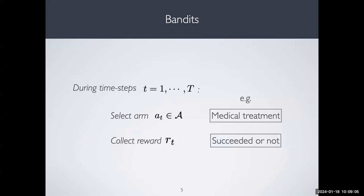We'll work in a specific kind of scenario I really like, called bandits. In a bandit setting, you have a sequential interaction between a learner and the world in time steps. Think of it as a patient interacting with you and you want to propose a particular medical treatment — we'll call the treatment an arm. When we run the treatment on a patient, we collect a reward, which in this case is whether the treatment succeeded or not.